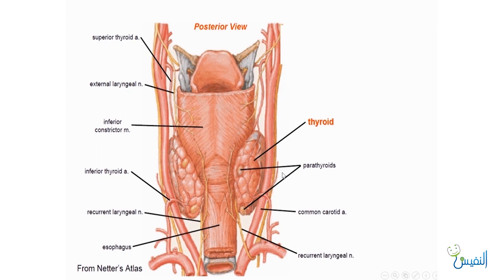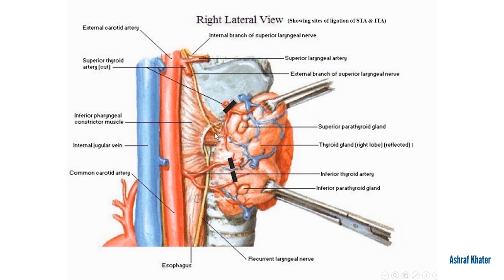The recurrent laryngeal nerve on the right side differs from the left. On the right side, it turns around the brachiocephalic artery, while on the left it turns around the ductus arteriosus between the aorta and pulmonary arteries, making its loop deeper. The nerve passes under the Berry's ligament to enter the larynx. The external laryngeal nerve supplies the cricothyroid muscle, which is responsible for tensing the vocal cord and producing high-pitched sound. Injury to the external laryngeal nerve causes redundancy of the cord and loss of high-pitched sound.